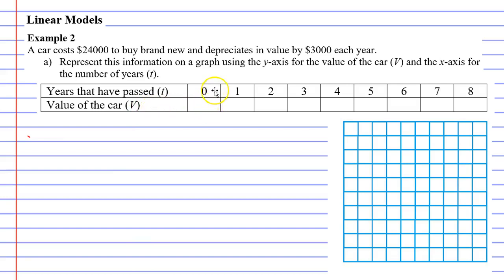They've already given us some T values from 0 all the way to 8, and we've just got to fill in underneath those numbers. So what's the value of the car after 0 years have passed? Well, when it was brand new, it was $24,000. That represents the 0 year. So under 0, it was worth $24,000.